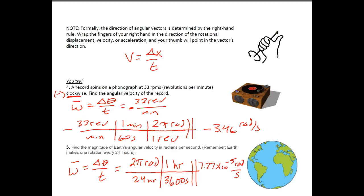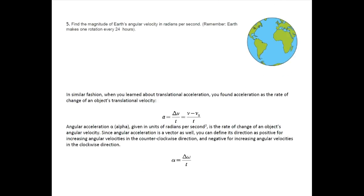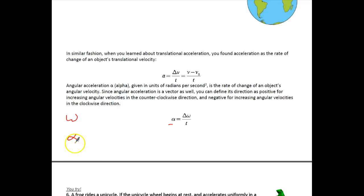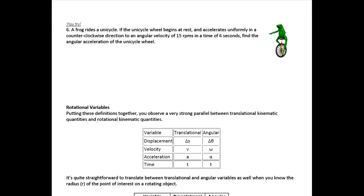Similarly, we can do the same thing with acceleration. Linear acceleration is change in velocity over change in time — final minus original velocity over time. Angular acceleration alpha equals change in angular velocity over change in time. I like to remember this as 'butt' because the symbol alpha looks like you're sitting on your butt, and if you go fishing you sit on your butt — that's how I remember the angular acceleration equation.